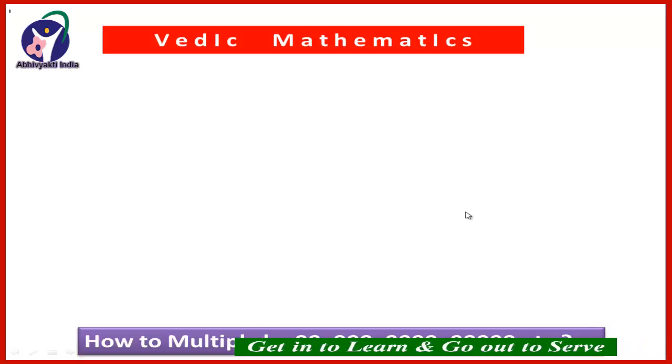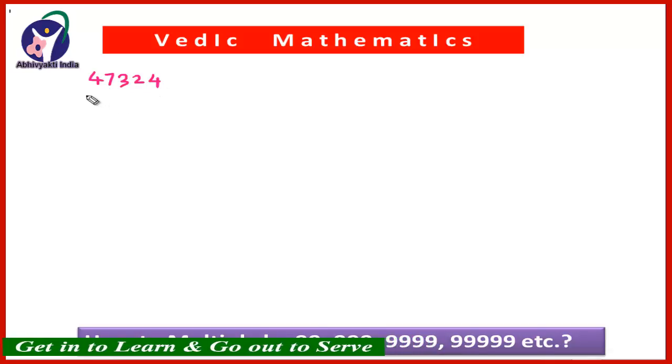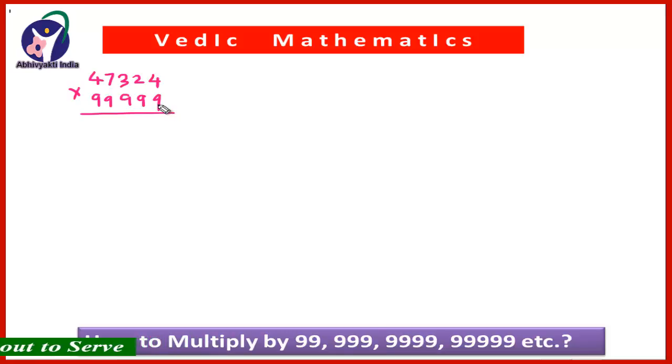So here, let us see the first question. If you multiply by our usual method, you will first multiply by 9 to this number, then by 9 at 10 place to this number and so on, and then you will add up to get the answer. But here is a very simple method to multiply this 5-digit number by a number 99,999.